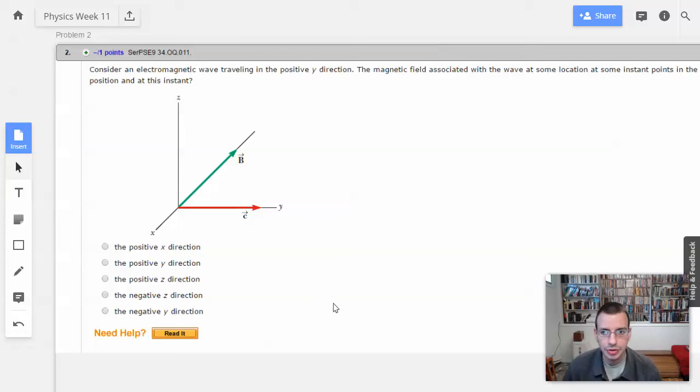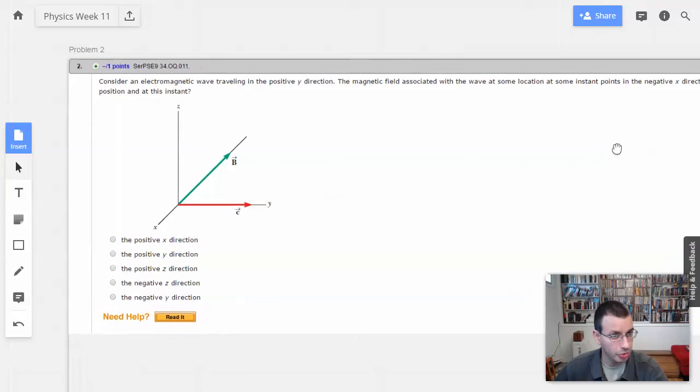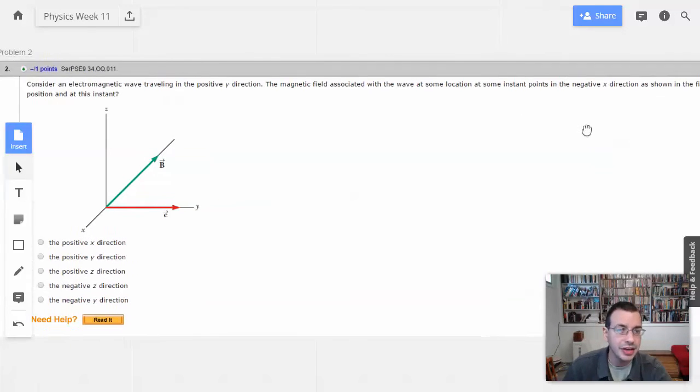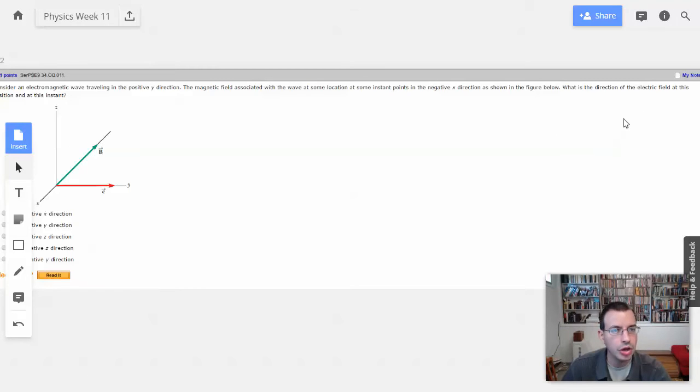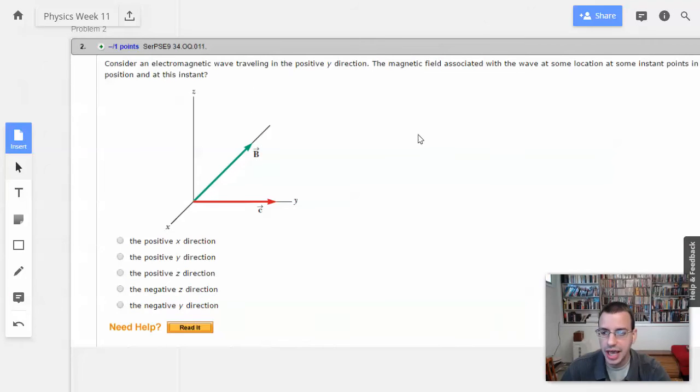Week 11, problem 2. Consider an electromagnetic wave traveling in the positive y direction. The magnetic field associated with the wave at some location at some instant points in the negative x direction as shown in the figure below. What is the direction of the electric field at this position and at this instant?